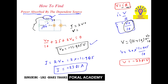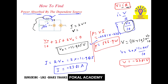This is the voltage and current of the dependent source. Now we can easily find the power absorbed. The power formula is P equals V times I. So P equals minus 23.81 volts times minus 23.81 amperes, which gives 566.9 watts. This is the power absorbed by the dependent source in the given circuit.